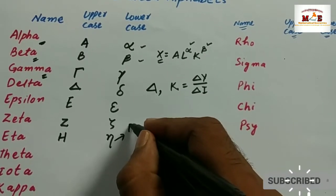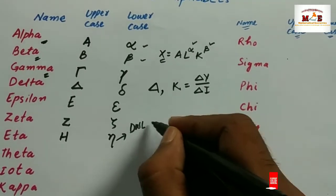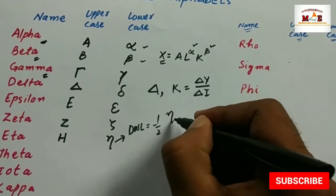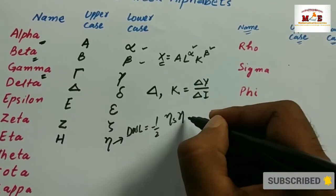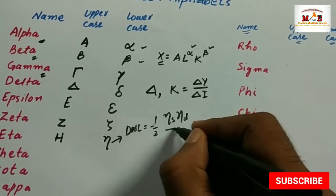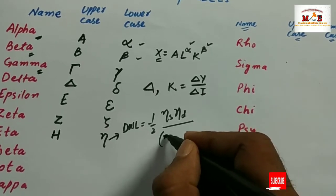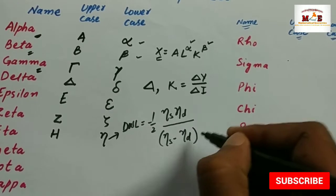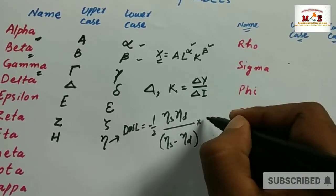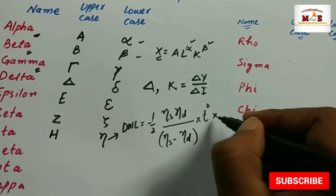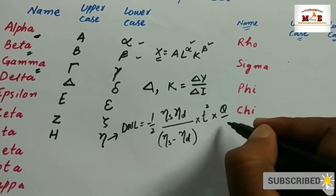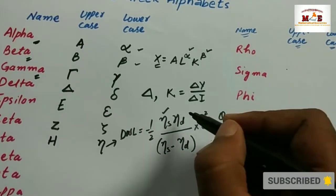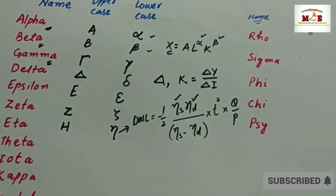The formula for deadweight loss is: DWL equals minus one-half times eta_s times eta_d divided by (eta_s minus eta_d), multiplied by t squared times q divided by p. Here eta_s represents the elasticity of supply and eta_d represents the elasticity of demand.